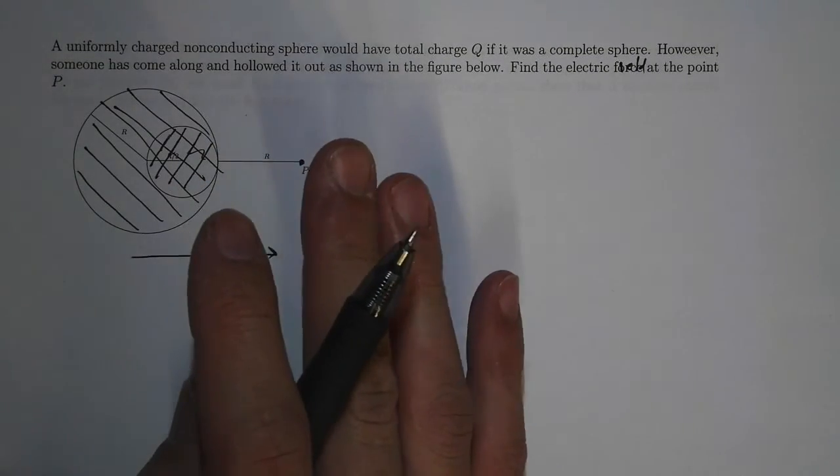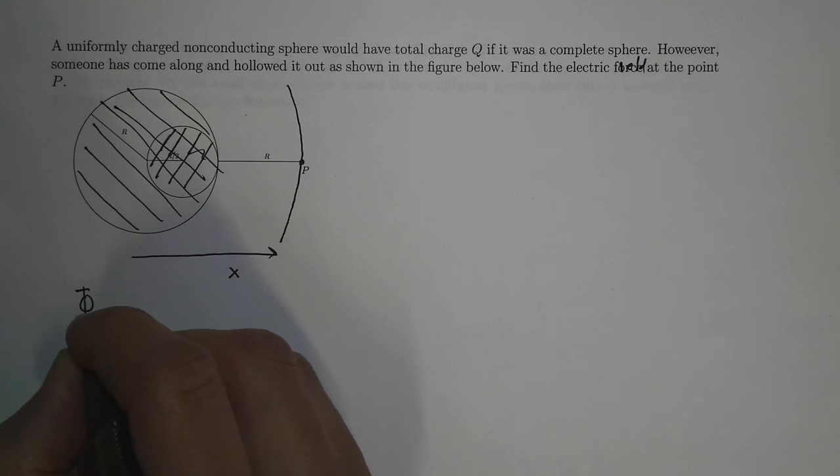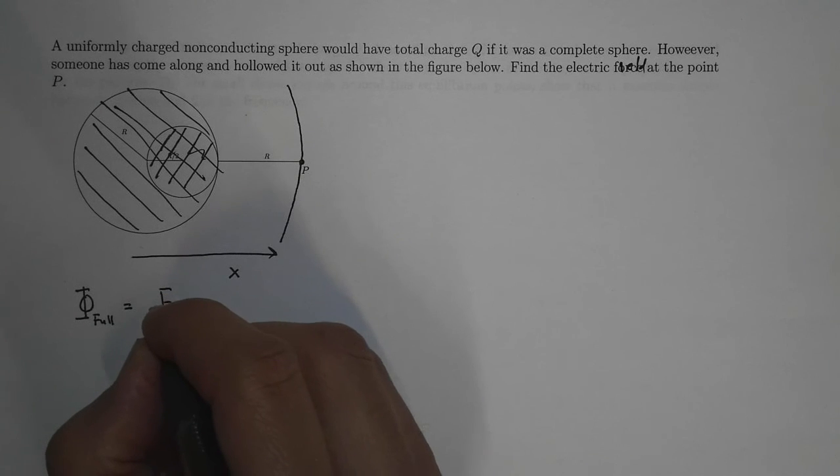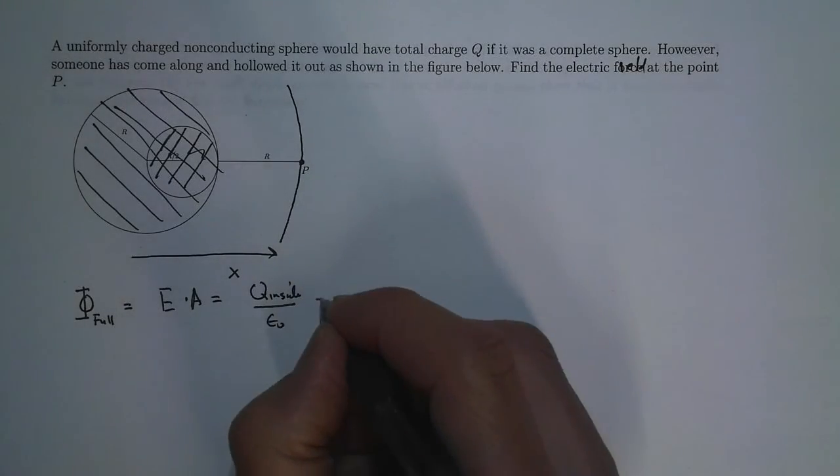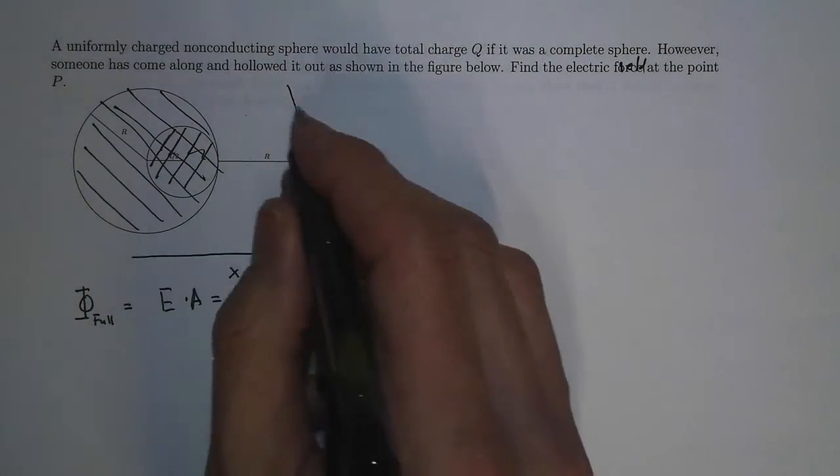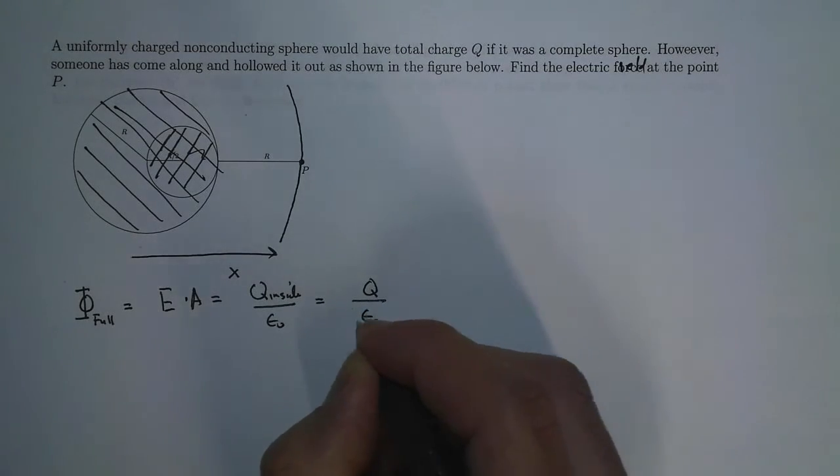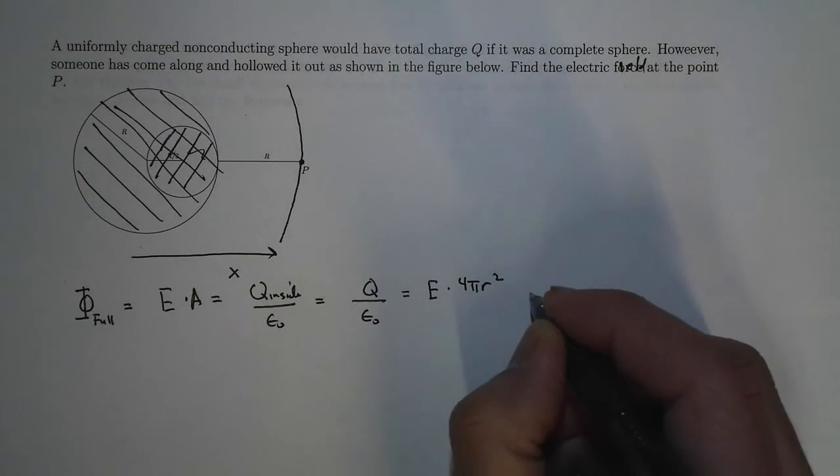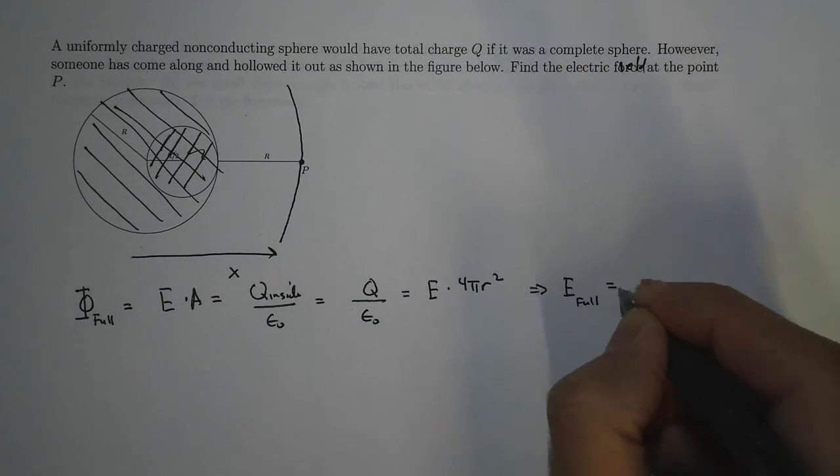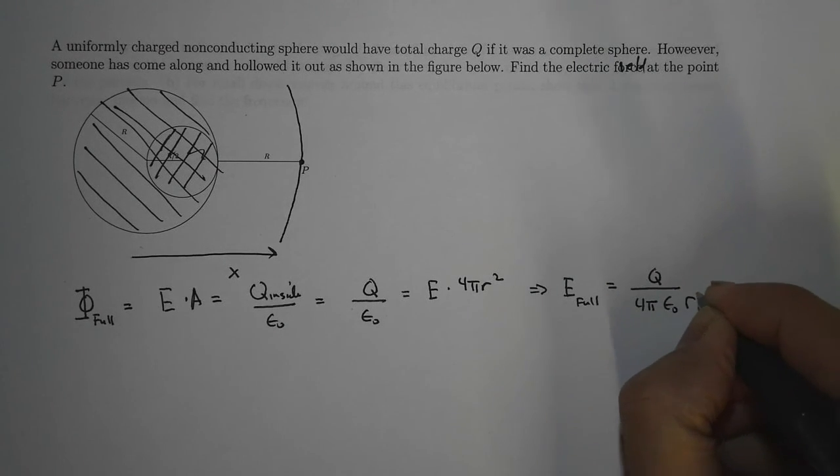Had the sphere been complete, I would have written the flux from the full sphere as electric field dot A equals Q inside over epsilon naught. Q inside would just be Q because point P is outside the sphere. E dot A is the electric field times 4 pi r squared. So the electric field of the full sphere is Q divided by 4 pi epsilon naught r squared in the r-hat direction.